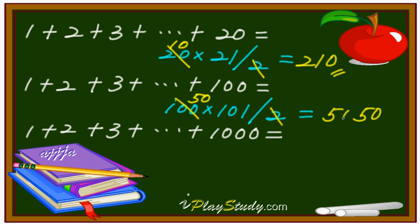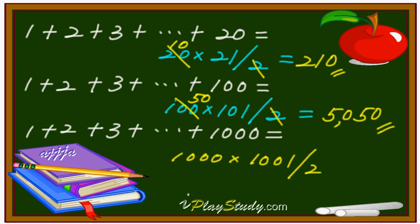Next: one through one thousand. The last number is one thousand, the next number is one thousand one, then divide by two. One thousand divided by two is five hundred. Five hundred times one thousand one — that's five hundred thousand five hundred. Very simple!